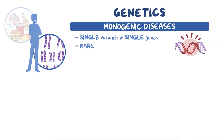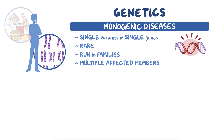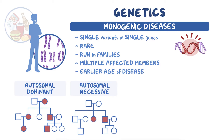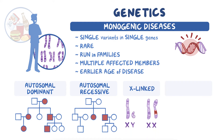Monogenic diseases run in families in predictable patterns and tend to have multiple affected members and earlier age of disease. These inheritance patterns include autosomal dominant and recessive, X-linked, and mitochondrial.